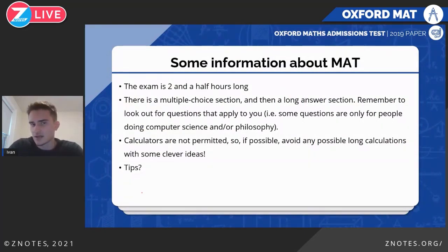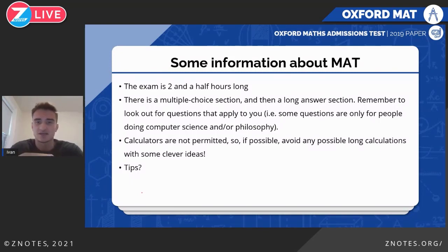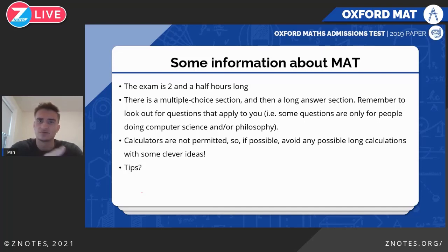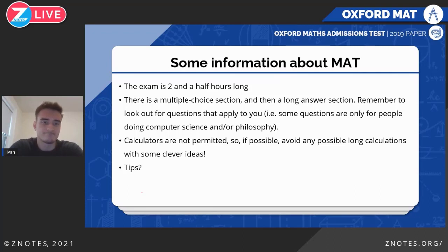The MAT paper is usually two and a half hours long. There's a multiple choice section at the start and then a long answer part. For the multiple choice everyone has to do it, but some long answer questions are restricted to certain fields. For example, if you're applying for computer science or philosophy, some questions are specifically geared for you. So be careful and don't do questions you shouldn't.